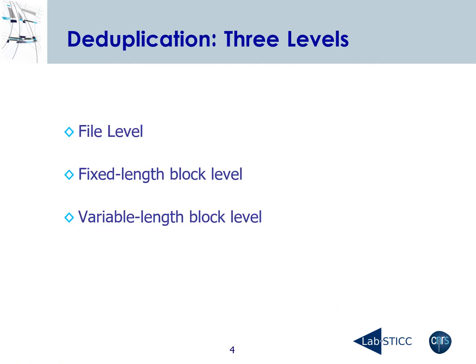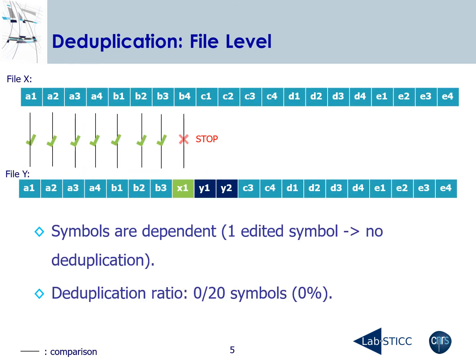Data deduplication can be used at different levels: file level, fixed-length block level, and variable-length block level. Depending on the situation, performances vary, but generally the variable-length block level offers good performances and is the most used. At the file level, all symbols of the file are compared, and if two symbols don't match at any position — even at the end — the file cannot be deduplicated. Symbols are dependent, which leads to bad deduplication ratios.